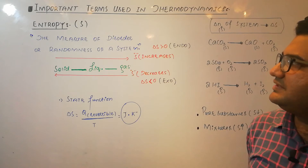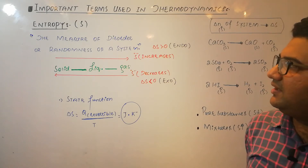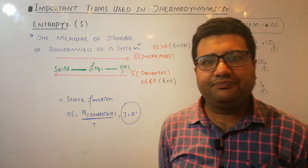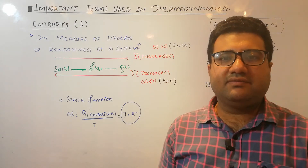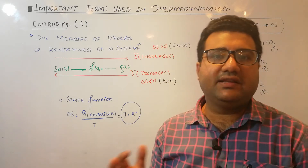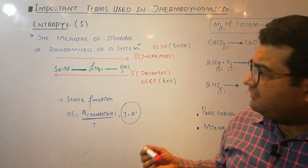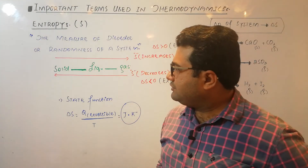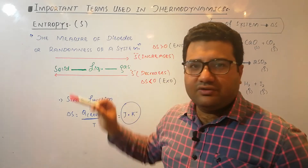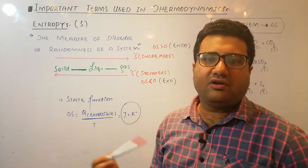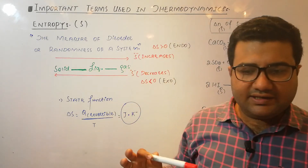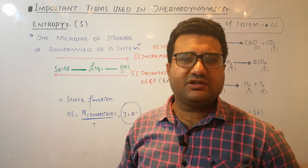The next important thermodynamic term is entropy, symbol S. Entropy is defined as the measure of disorder or randomness of a system — how the particles in a system are arranged, whether randomly or in an orderly fashion. A simple example is phase change: in solids, particles show well-ordered arrangement due to very low kinetic energy, with only vibrational kinetic energy present.